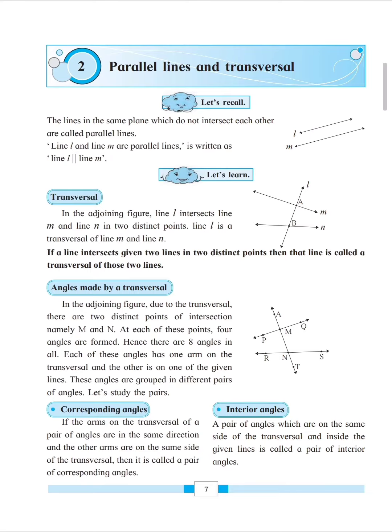A transversal is a line which passes through two different lines at two different points.